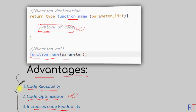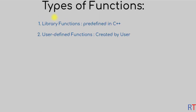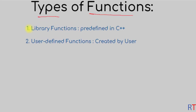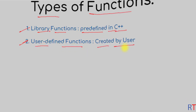There are two types of functions available: library functions and user-defined functions. Library functions are predefined in the C++ library, and user-defined functions are created by the user.